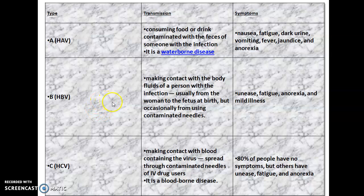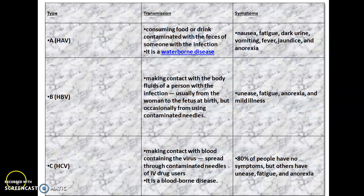Hepatitis B is caused by the Hepatitis B virus and Hepatitis C is caused by the Hepatitis C virus. These two types are more severe and prolonged in nature and can lead to death. They are also transmitted by blood transfusion, improperly sterilized syringes, sexual contact, and saliva of an infected person.